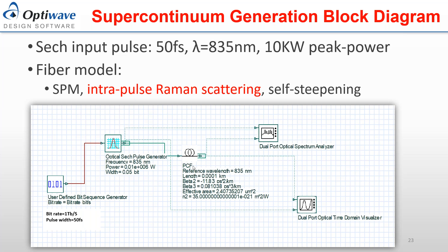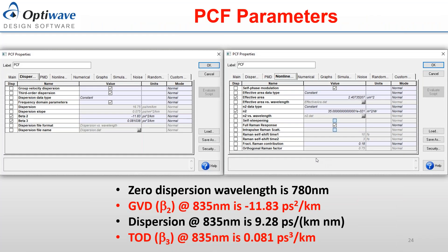Once the simulation is done, you can look at the spectrum generated. The dispersion parameter extracted at 835 nanometers is minus 11.83 picoseconds squared per kilometer. If you calculate, you get dispersion around 9.28 ps/nm/km. Depending on the mode of operation of the component, you can enter either this parameter or the group velocity dispersion. The third-order dispersion parameter is 0.081 picoseconds cubed per kilometer. The effective area is 22.4 micrometers squared, and the nonlinear refractive index is 35×10⁻²¹ meters squared per watt.